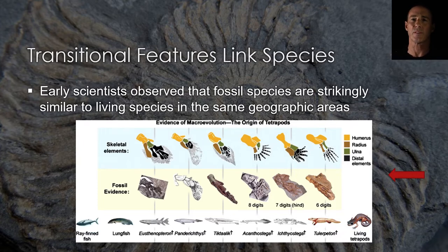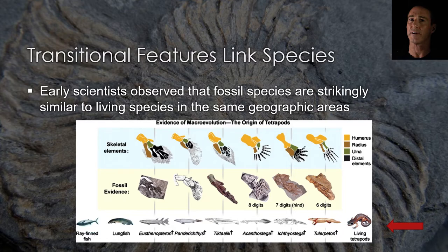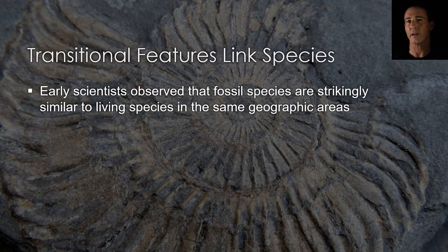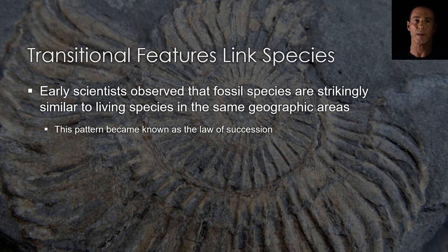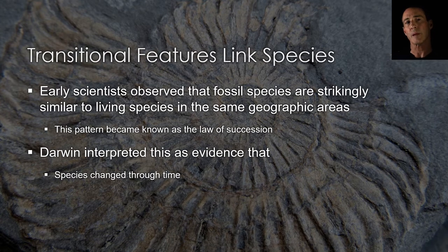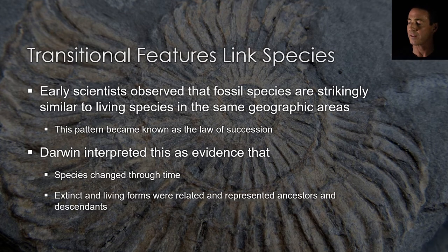Researchers have reported striking resemblances between the fossils found in the rocks under certain regions and the living species found in the same geographic areas. Extinct species in the fossil record were succeeded in the same region by similar species. The pattern was so widespread that it became known as the law of succession. Darwin pointed out that it provided strong evidence in favor of the hypothesis that species had changed through time — that the extinct forms and living forms were related, representing ancestors and descendants.